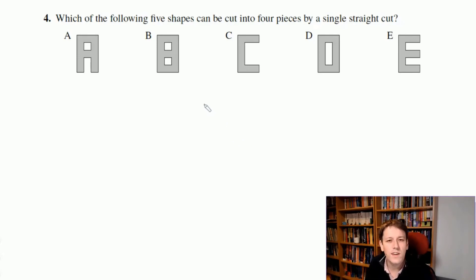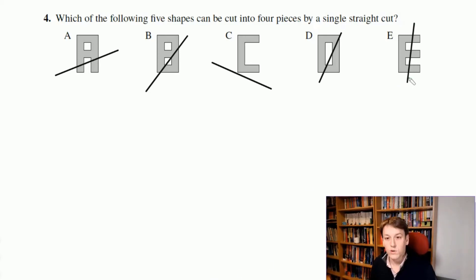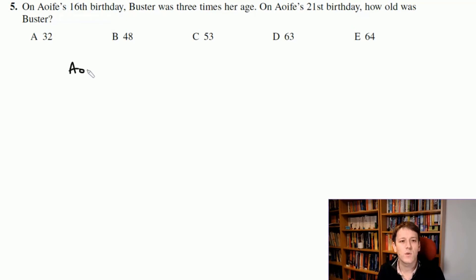We need to cut one of these 5 shapes into 4 pieces by a single straight cut. There's nothing really more to be done here than just playing around with it. If you're doing this as a physical exam, you can use the side of the piece of paper to imagine cutting across it. I look at A here, I can split it into one piece, 2 or 3 pieces pretty easily, but there's no way to make 4. These jaggedy edges are quite helpful. If you keep playing around with it you'll find that E is the right answer. I can make a cut like this and that would split it into 4 pieces: 1 piece here, 2 here, 3 here and 4 here.